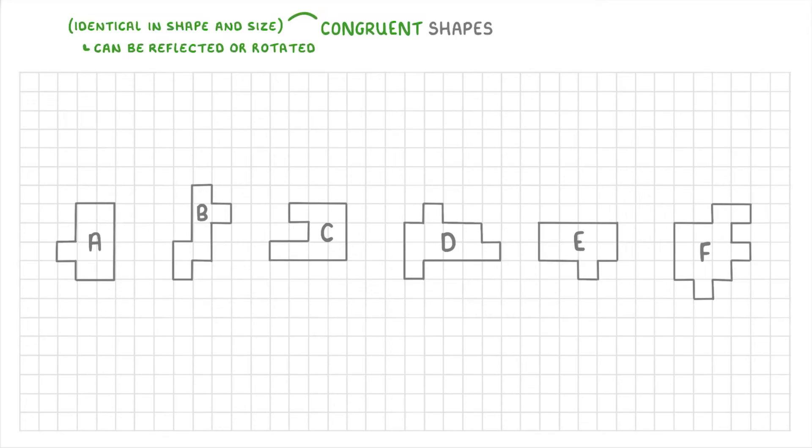So in this case, the answer would be A and E, because A is just a 90 degrees clockwise rotation of E, which is the same thing as saying that E is a 90 degrees counterclockwise rotation of A. Either way, these two have the same shape and size, so they're congruent.